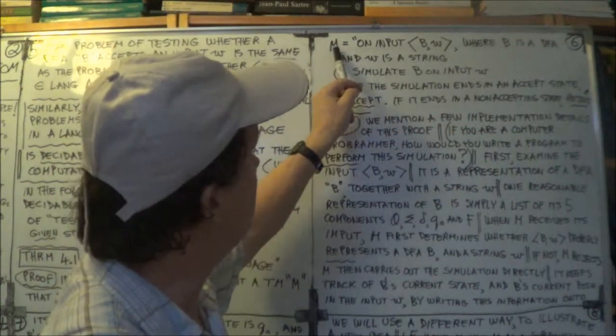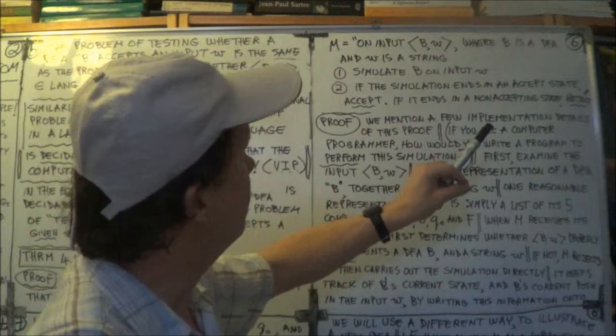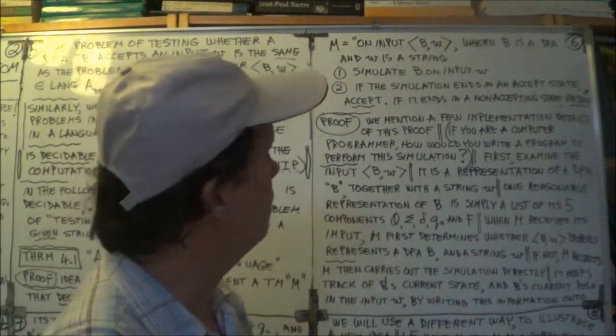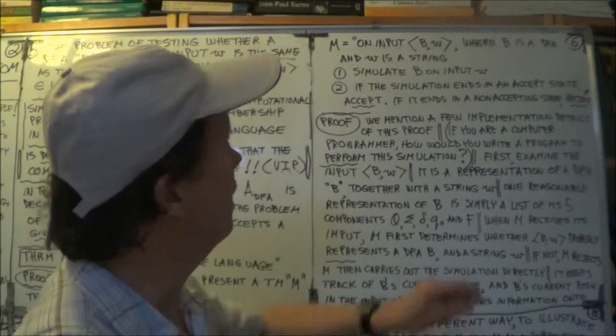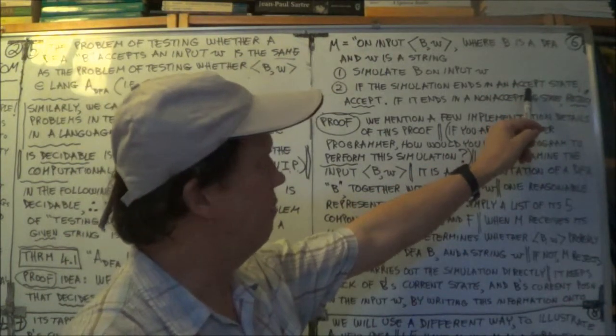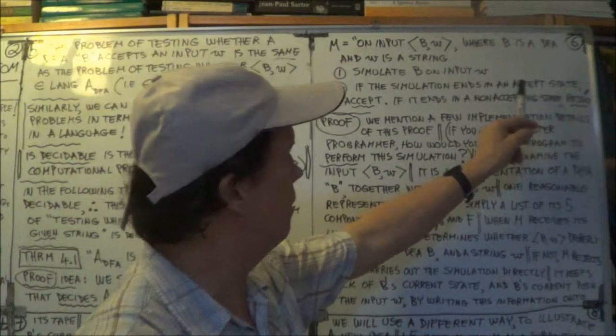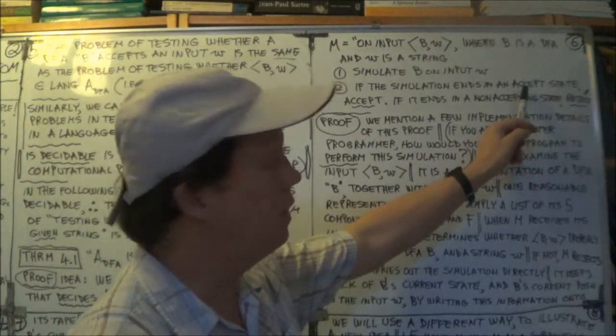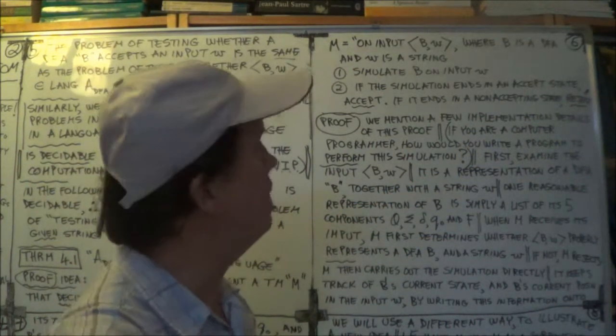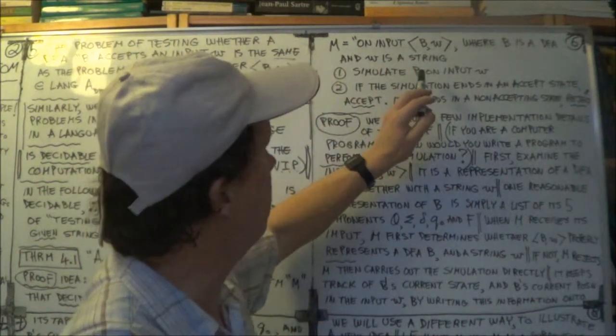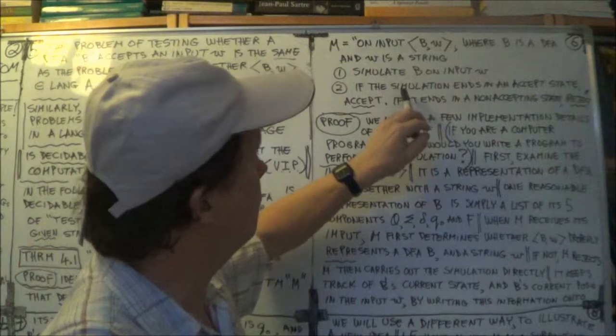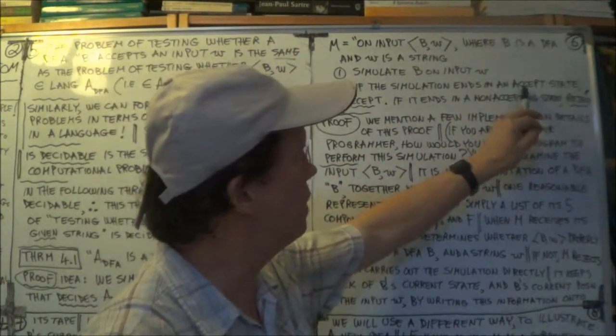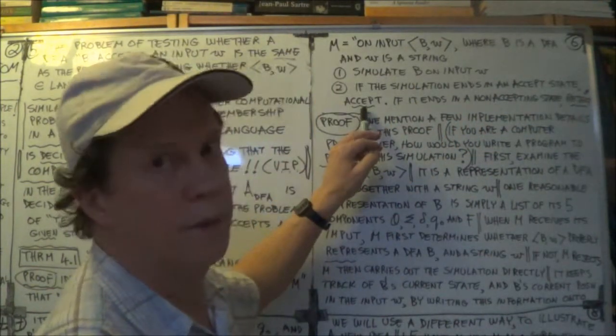And then you look to see if M is in an accept state. Now, here's again a bit of a lack of clarity of Sipser, I'm writing this out word for word here. Now, I assume the accept state here is one of B's accept states, right? Because M is supposed to be behaving like this DFA. So when the simulation ends, if B is in an accept state, well, then M will accept.